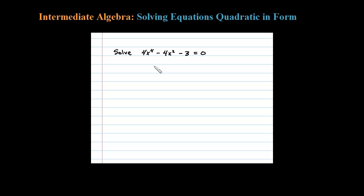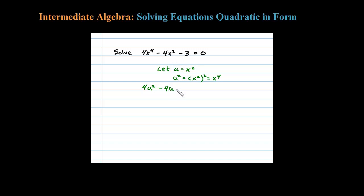To solve this equation, we're going to first make it look like a quadratic by making a substitution. Let u equal x squared, so then u squared equals x squared squared, or x to the fourth. When I make the substitution, we'll be left with x to the fourth — which we know is u squared — minus 4 times u minus 3 equals 0. Now look at that: it looks like a regular quadratic with variable u.